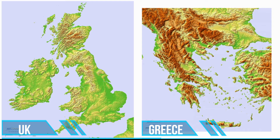These are topographical maps, which show the hills and mountains of the two countries. If you look at the UK, you can see all the green, flat, fertile land, which is good for growing on and easy to build on. If you look at Greece, you can see there's a lot less of that flat, fertile land. In fact, there's a lot more brown, hilly mountains everywhere, which are very difficult to build on, makes getting around a lot harder, and it's a bit harder to grow crops and manage cattle.